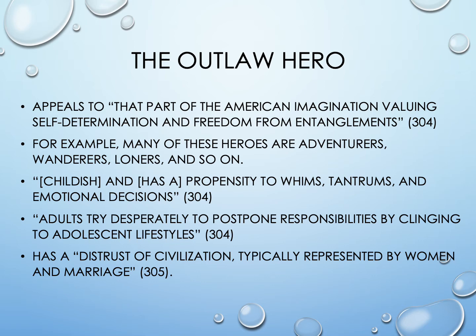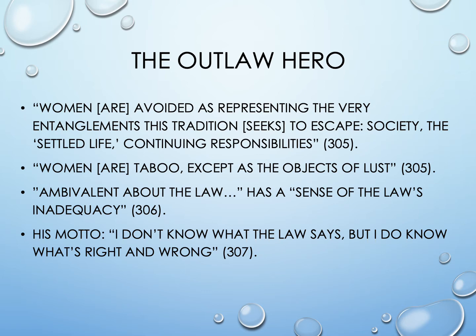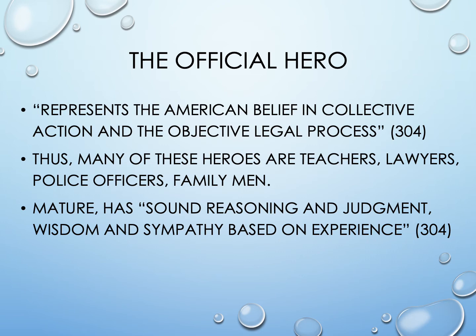Adults try desperately to postpone responsibilities by clinging to adolescent lifestyles. This hero has a distrust of civilization, typically represented by women and marriage. Women are avoided as representing the very entanglements this tradition seeks to escape — society, the settled life, continuing responsibilities. Women are taboo except as the objects of lust. The outlaw hero is ambivalent about the law and has a sense of the law's inadequacy. His motto: 'I don't know what the law says, but I do know what's right and wrong.'